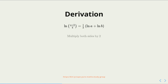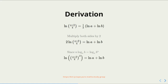We can multiply both sides by 2 to get 2 times the natural log of (a plus b) on 4 equal to the natural log of a plus the natural log of b. Since n times the log of b to the base a is equal to the log of b to the n to the base a, it follows that 2 times the natural log of (a plus b) on 4 is equal to the natural log of (a plus b) on 4, all squared.